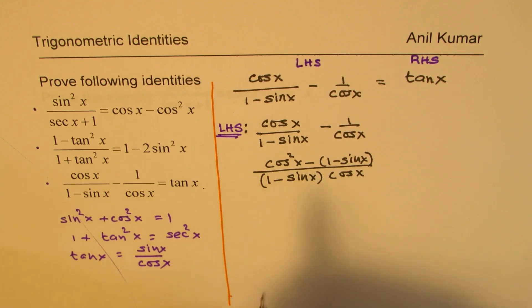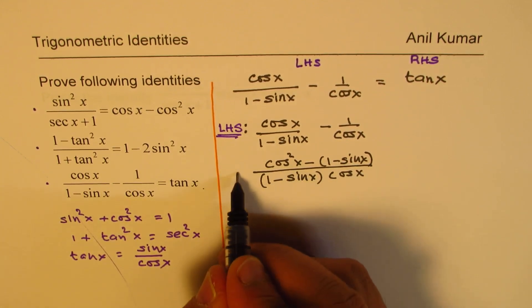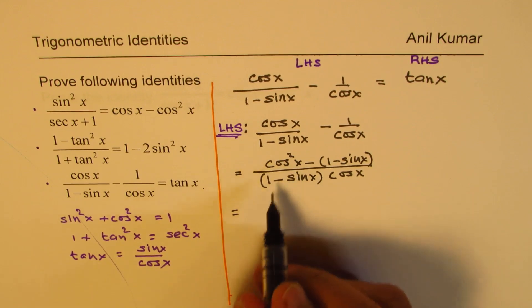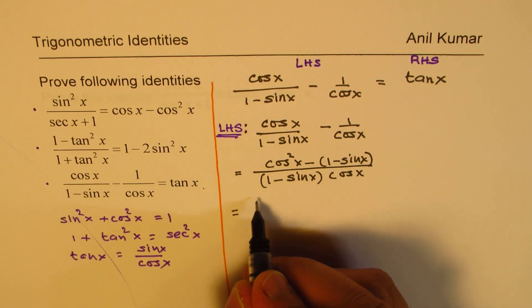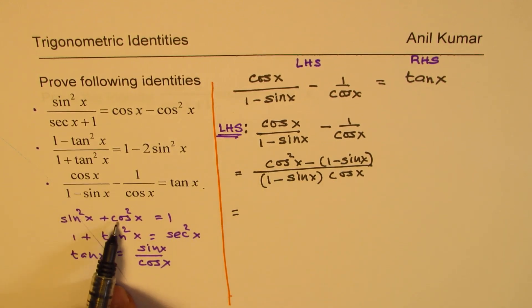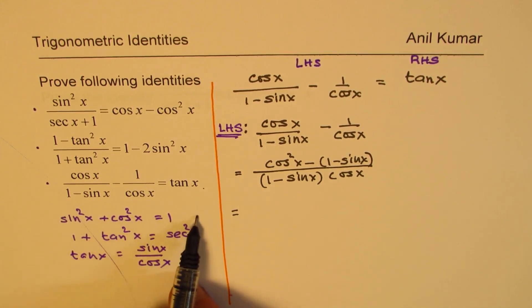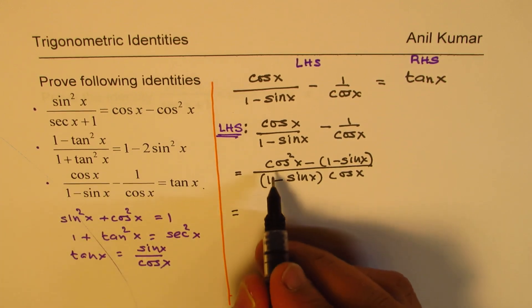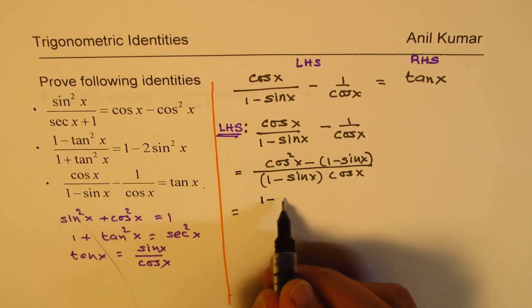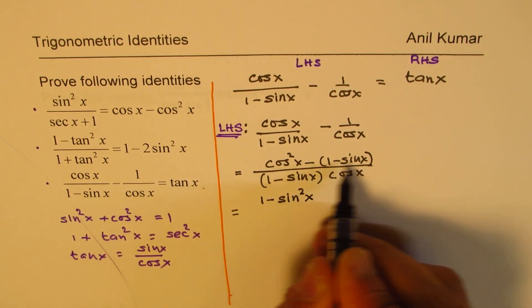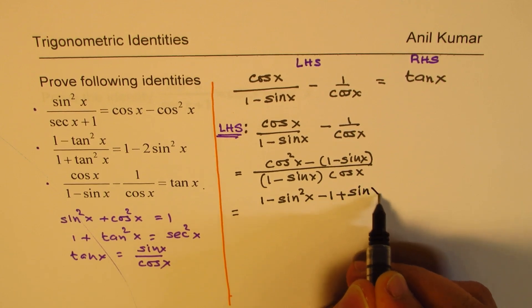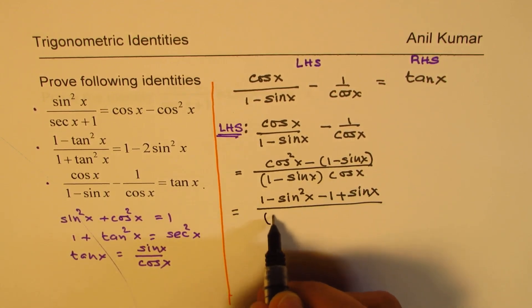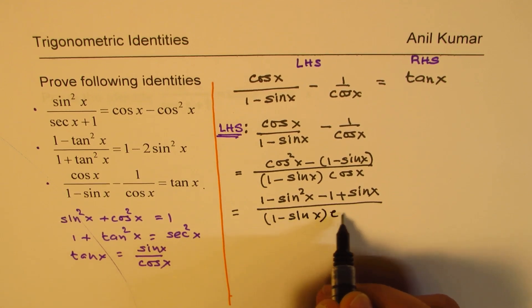At this stage, we write cosine squared x as 1 minus sine squared x, so all numerator terms become sine terms. Rearranging from sine squared x plus cosine squared x equals 1, cosine squared x equals 1 minus sine squared x. Opening the bracket gives minus 1 and plus sine x.